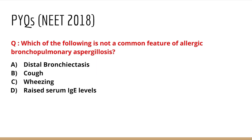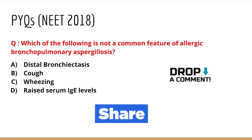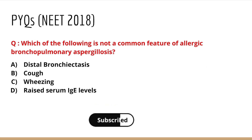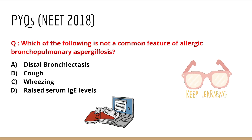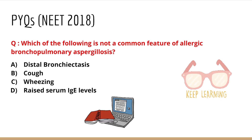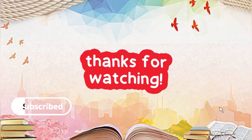So the answer is distal bronchiectasis — that is the feature which is not common in ABPA. This was all about ABPA, guys. I hope you are benefiting from this revision series. If you are new to my channel, please subscribe and hit the bell icon. I'll be coming up with similar episodes — till then, keep studying, keep revising, and I'll see you in the next episode!